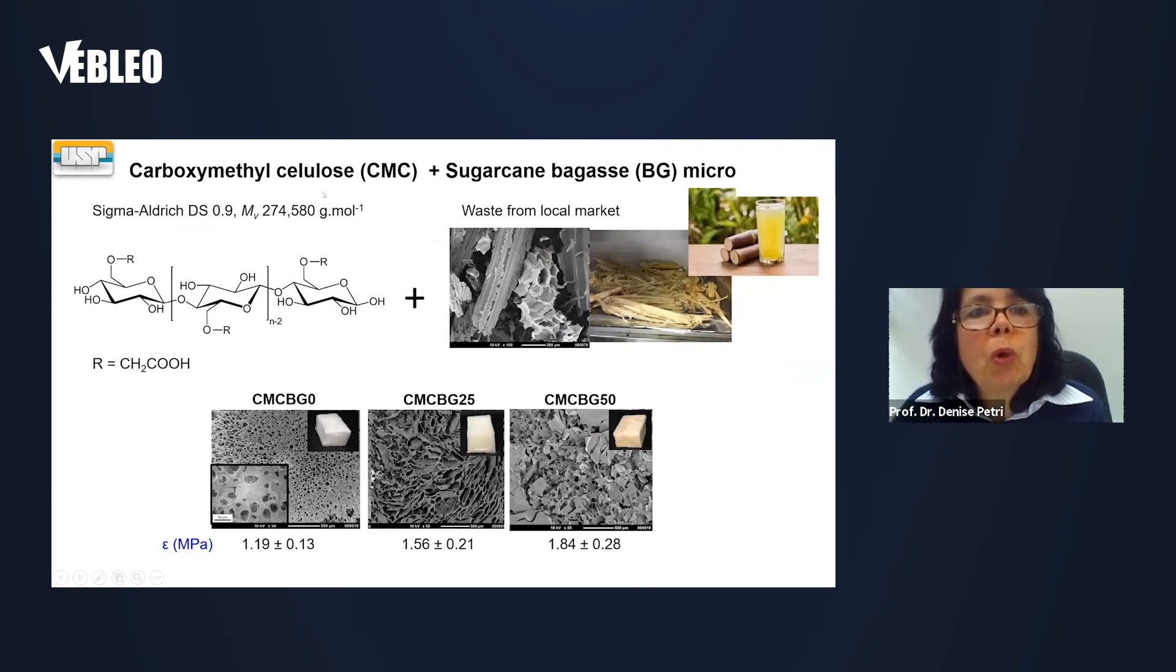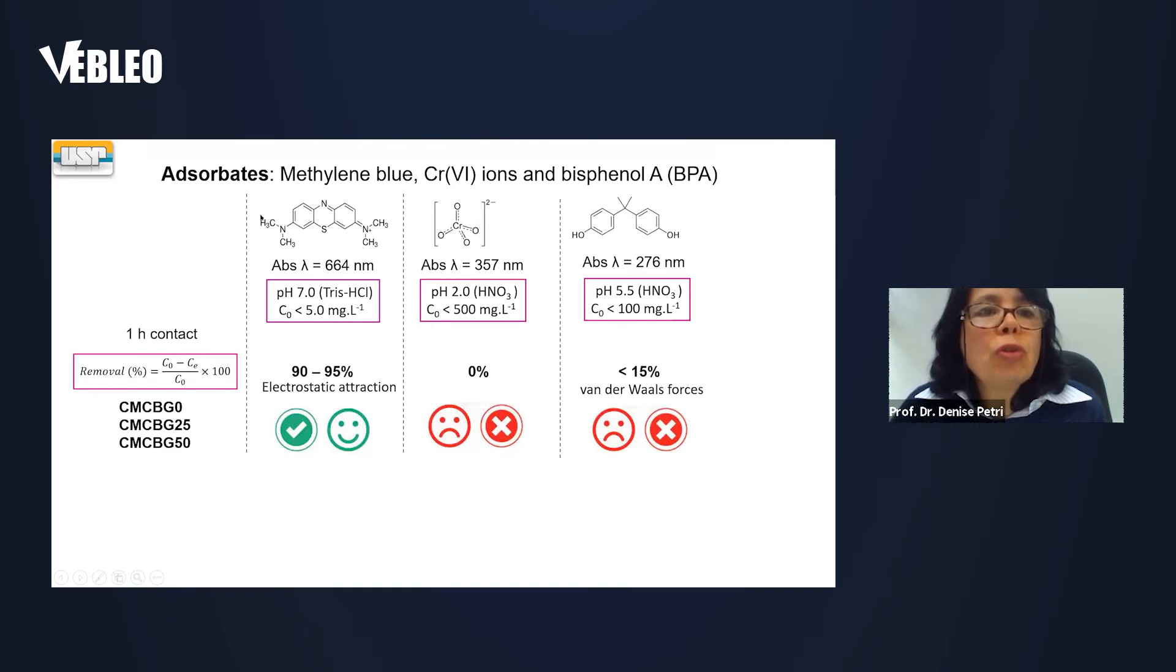We can also produce interesting materials or form interesting materials using waste. In this case, the waste came from a local market where they make sugarcane juice. So the sugarcane bagasse was transformed into small microparticles that were introduced to carboxymethyl cellulose porous structures. And when we introduced it, the pores changed in their shapes, but they also became more stiffer. So we have here almost double the Young's modulus of these materials. We wanted to use this sugarcane bagasse particles CMC absorbents for methylene blue, chromate, and bisphenol A, so three different pollutants.